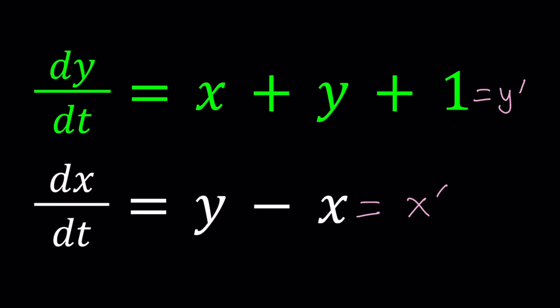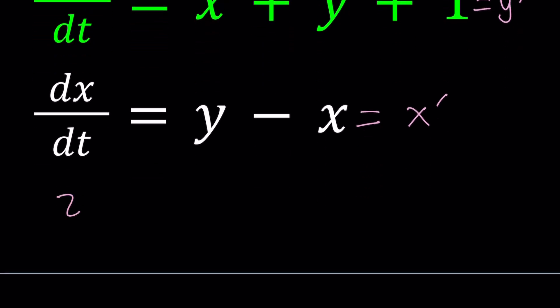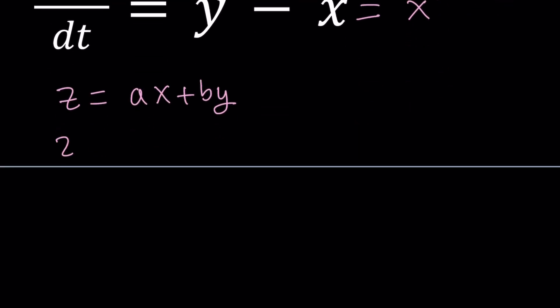Obviously, there's more than one way to approach it, and if you do know of alternative methods, please let us know in the comment section down below. So I'm going to start by setting z equal to ax plus by. We're going to determine a and b in a little bit, but my goal is to be able to write z as a linear combination of x and y. And you'll see why this is helpful in a little bit.